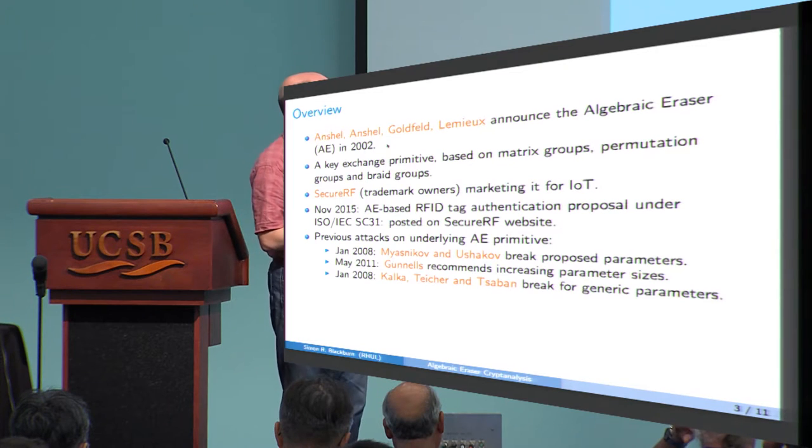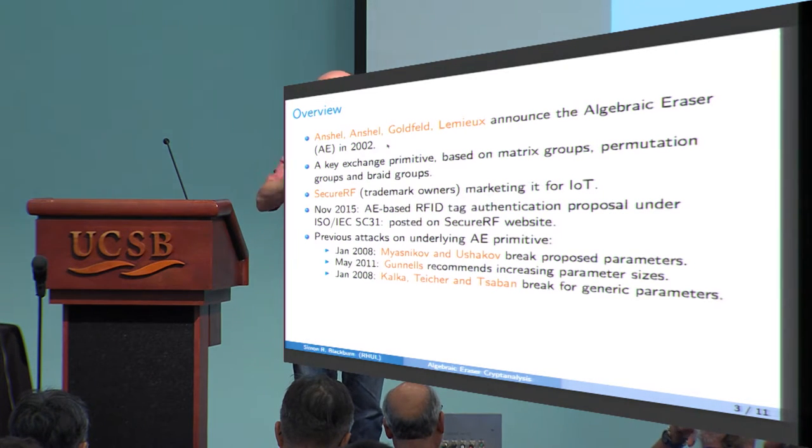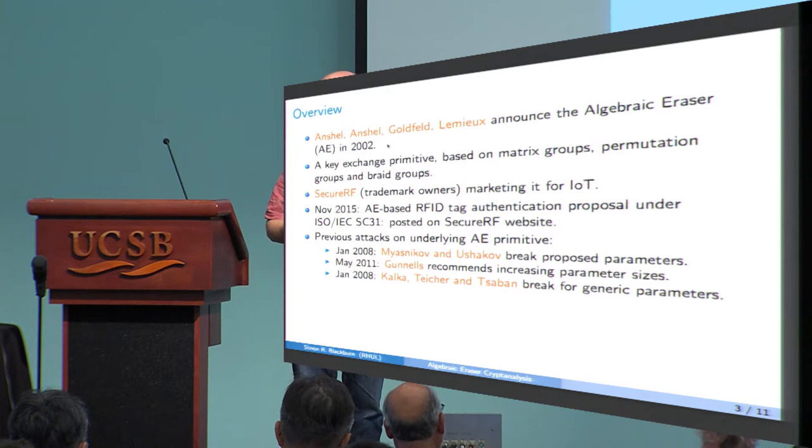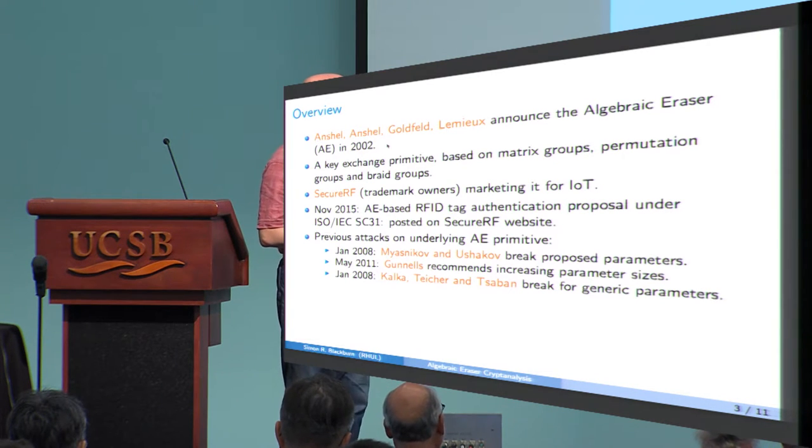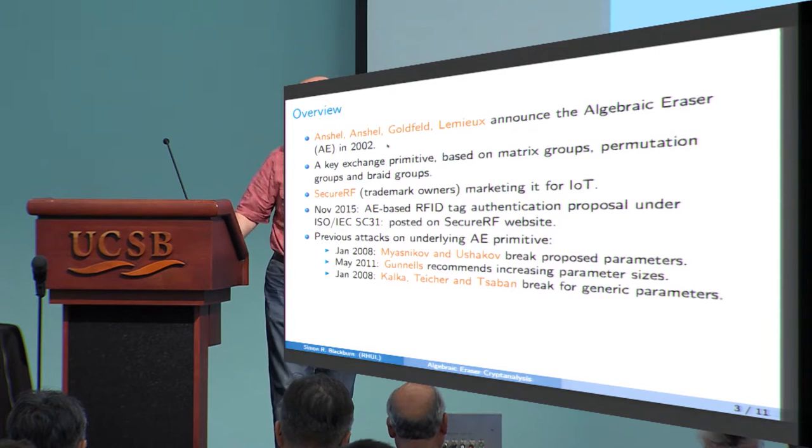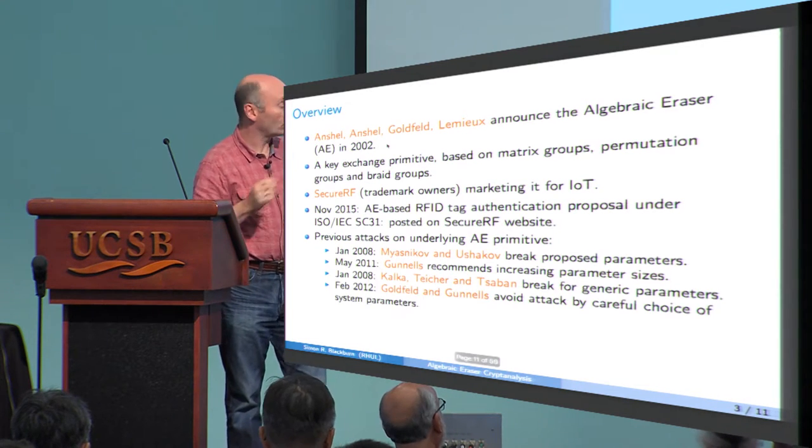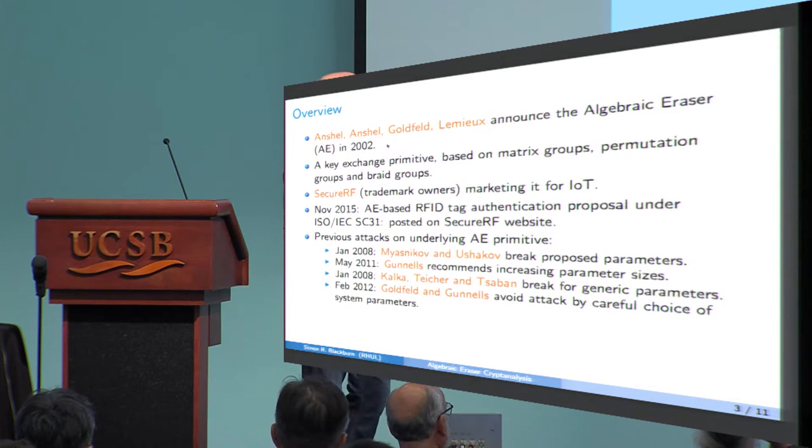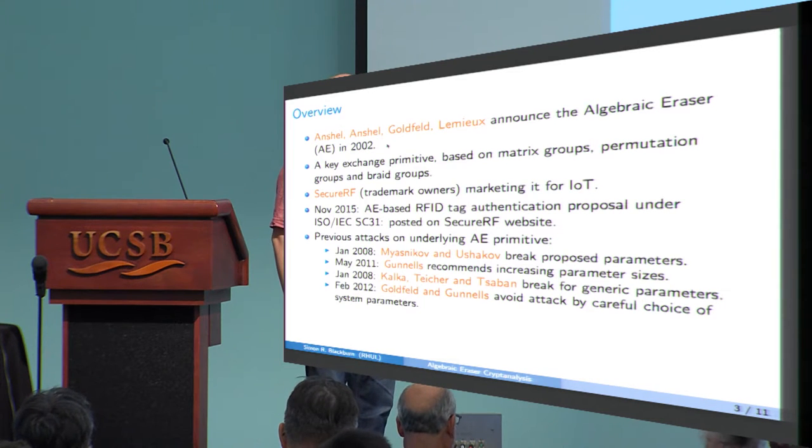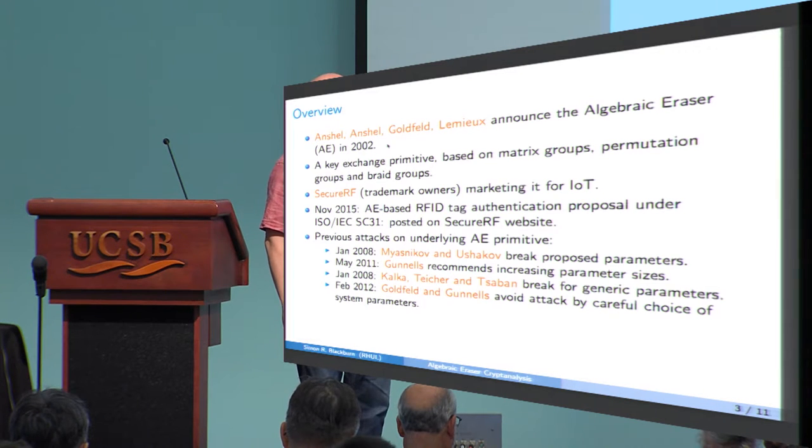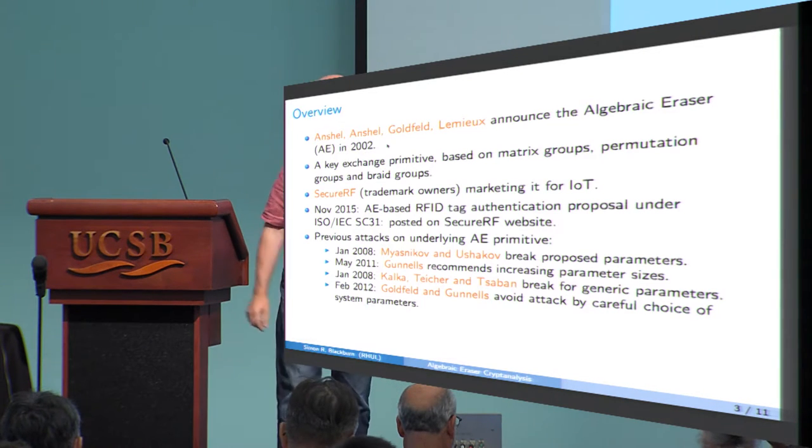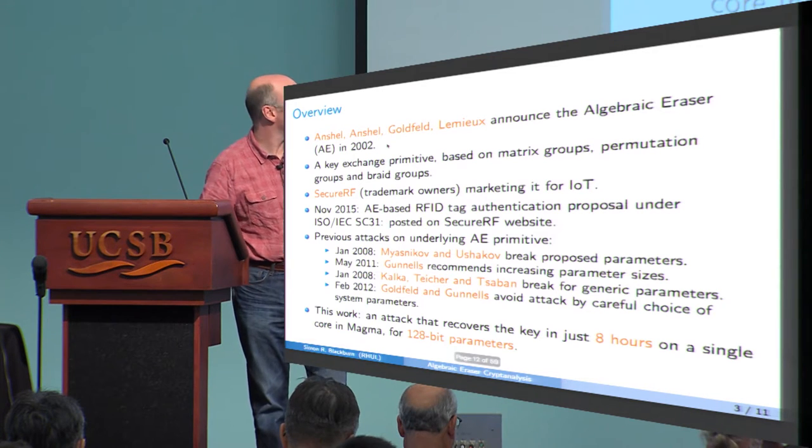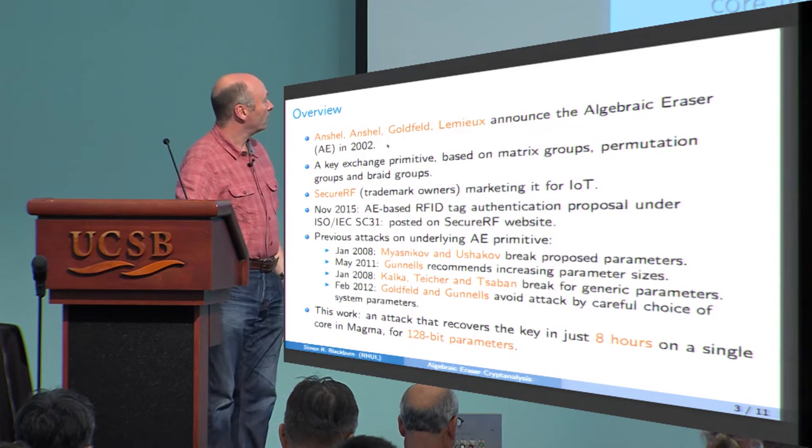So all they did was say, let's choose these things at random, subject to all the publicly known constraints. So it's a convincing attack for these generic parameters. And this was responded to in a paper by Goldfeld and Gunnels, a preprint, which said, basically, you can avoid the attack by careful choice of system parameters.